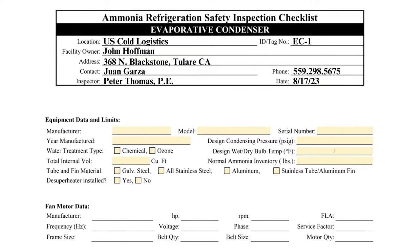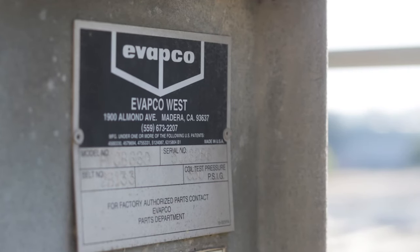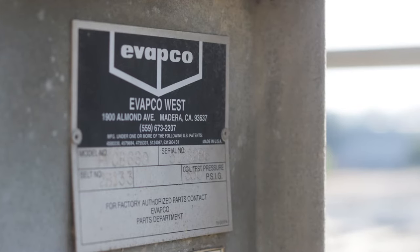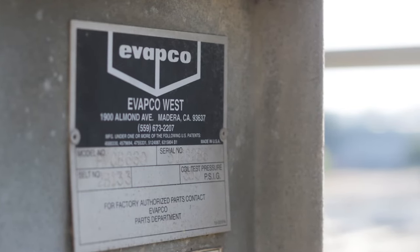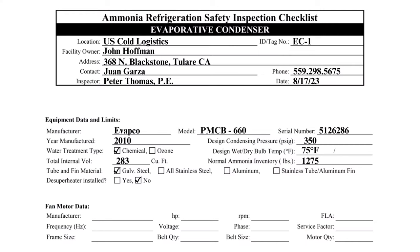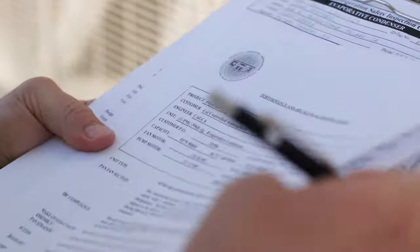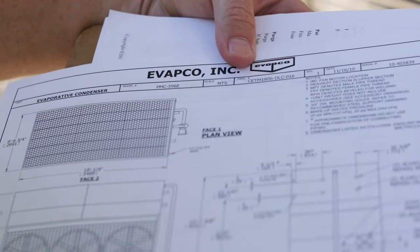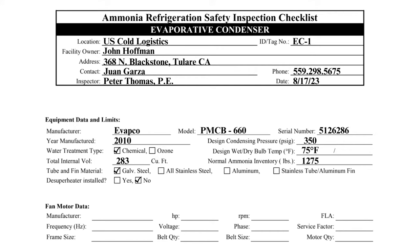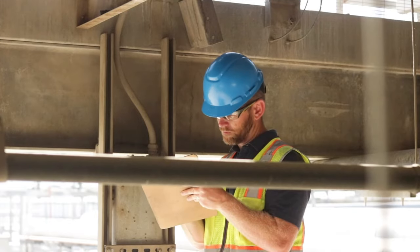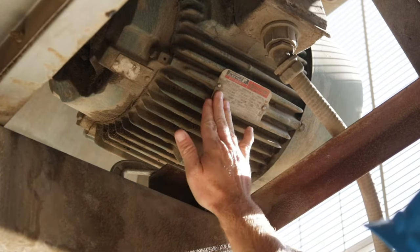The manufacturer, model, and serial number in the section titled Equipment Data and Limits can be obtained from the condenser's nameplate. Many condenser manufacturers use the first two digits of the serial number to indicate the year the condenser was manufactured. The condenser submittal or catalog is needed to populate the other fields in this section. For example, this condenser has a design condensing pressure of 350 PSIG and a normal ammonia inventory of 1,275 pounds.